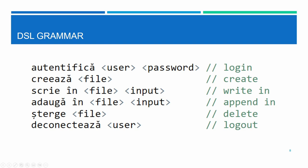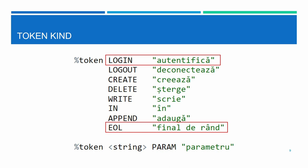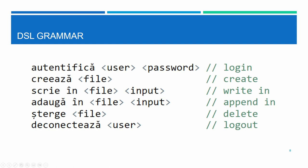Let's look at what Bison does with these tokens. The token kind is the visible token that appears in your input — in this case, keywords like login, logout, create, and so on. EOL stands for end-of-line and is a Bison internal you don't need to specify. The last token type is the parameter — basically everything that is not a keyword, such as user, password, file, or input.